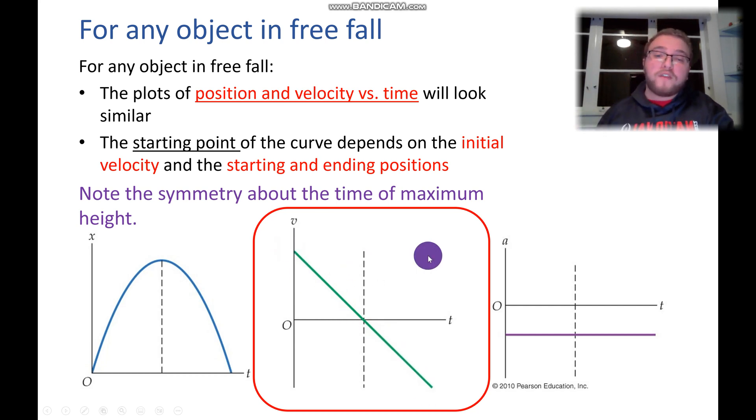Because then our velocity becomes negative and it starts falling back down. But our graph is still kind of diagonally symmetric right here.